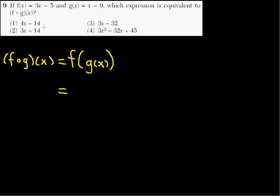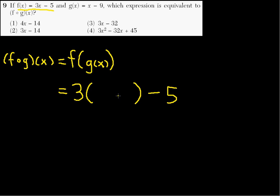What that means is that we take the function f of X, this 3x minus 5, and wherever we see an X, we just put a big set of parentheses. So we're going to take the 3x and instead of writing an X, we put a big set of parentheses like this, and then minus 5 — there is no X, so we don't put any more parentheses. Inside that parentheses, I'm going to put the function g of X: x minus 9.